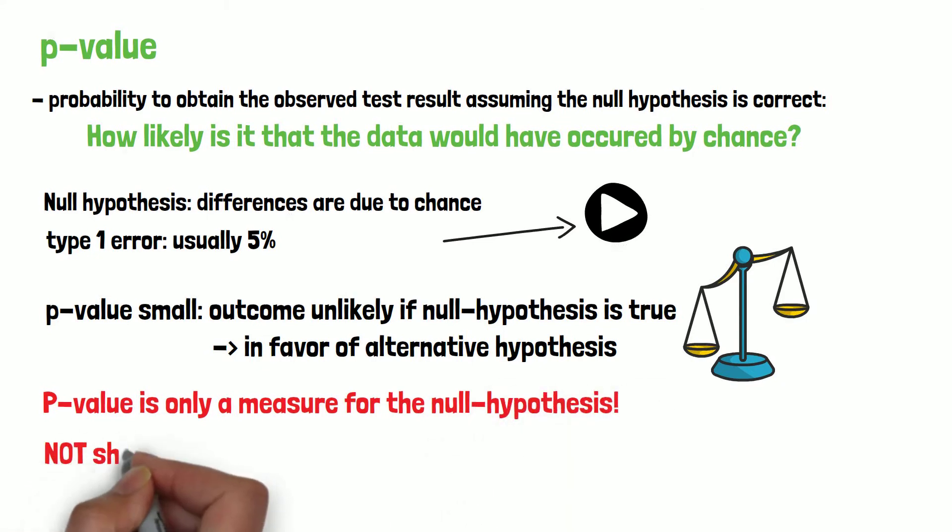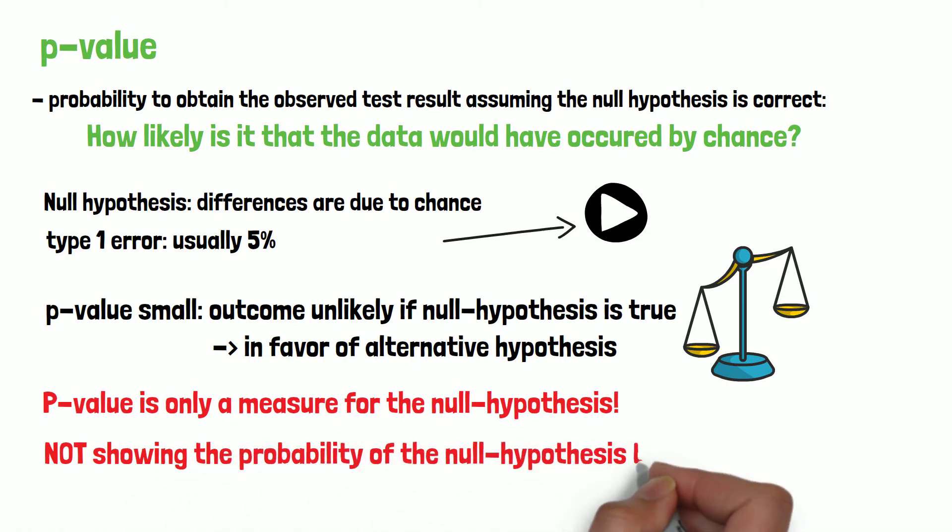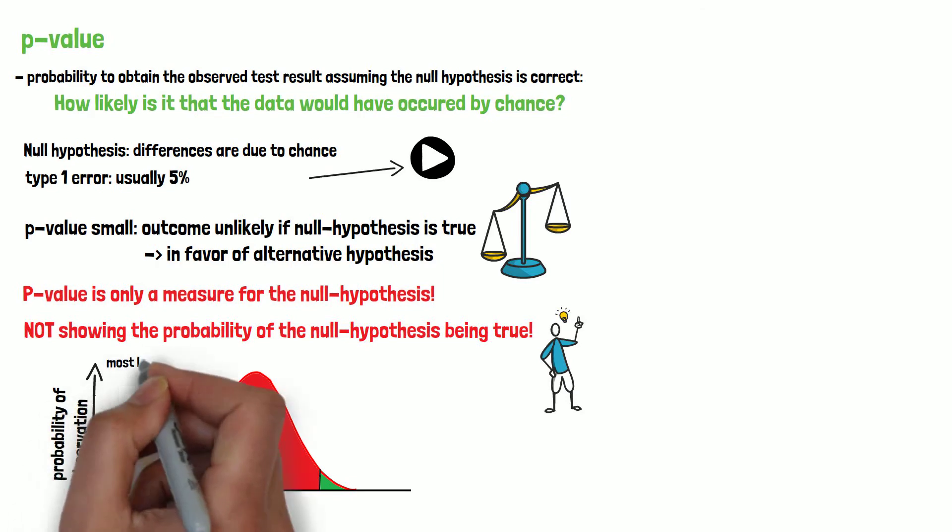The p-value is also not showing the probability of the null hypothesis being true. It can only help in making conclusions about the probability of observing the data as it is since the test is calculated assuming that the null hypothesis is correct.